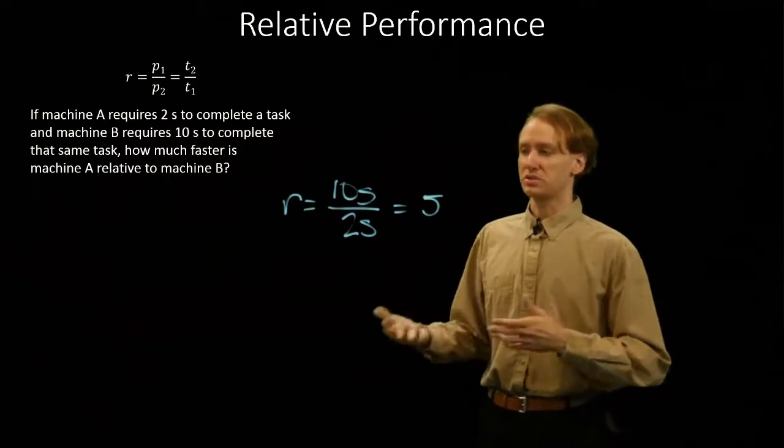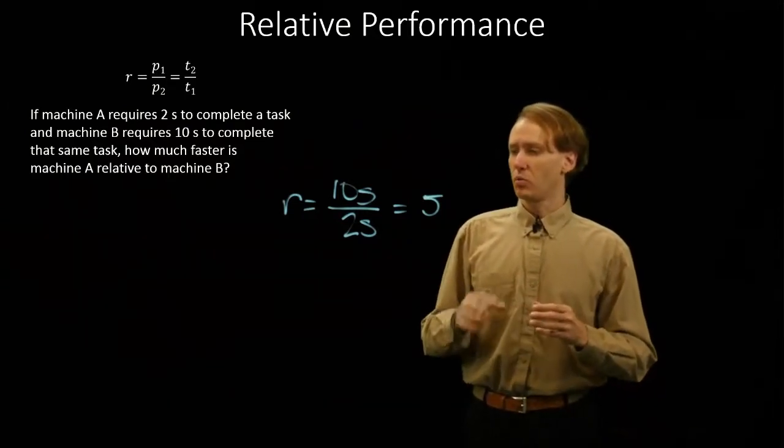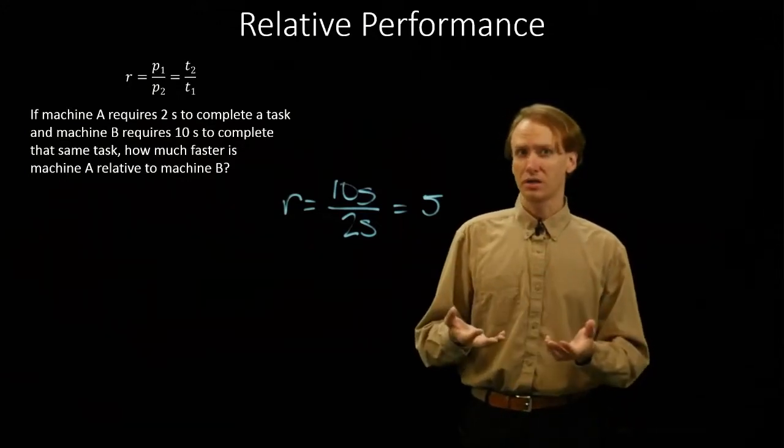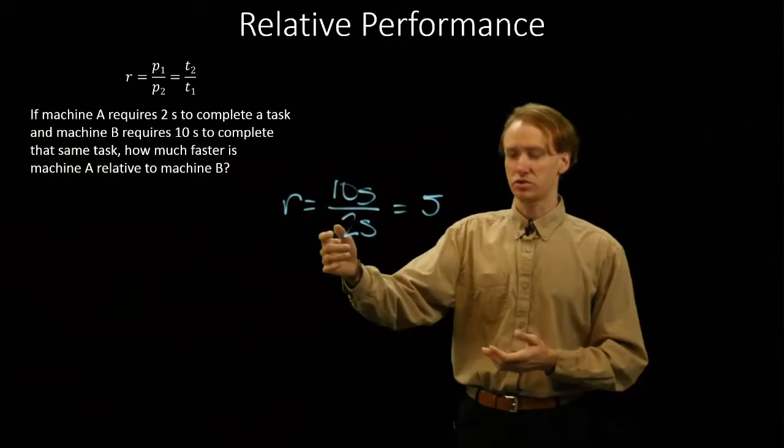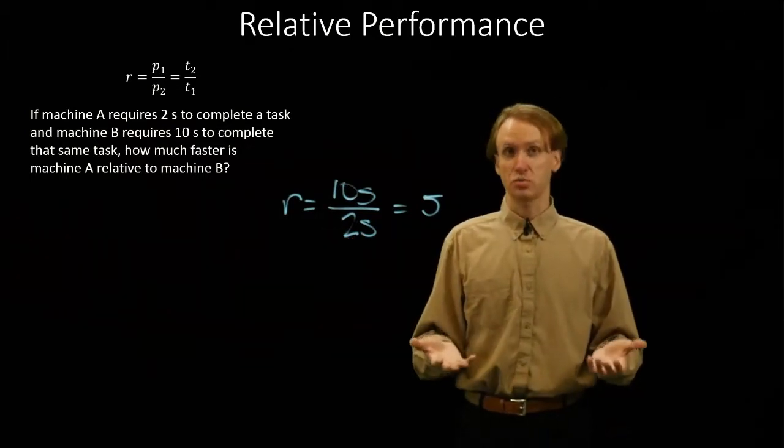But this number can be more or less than one. It can be large, it can be small. But one thing we'll notice is that if we get a number that is equal to one, that means that both of those two times were the same. So both of those machines performed just as well.